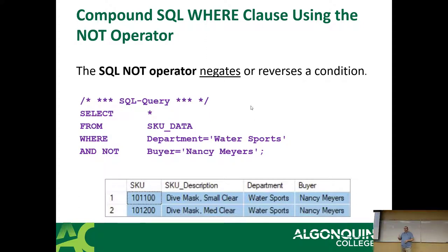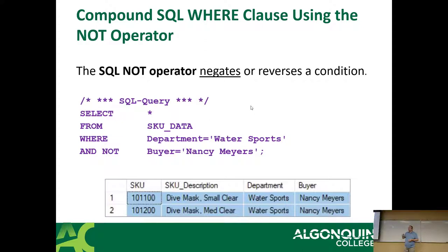NOT negates: SELECT * FROM sku_data WHERE department = 'Water Sports' AND NOT buyer = 'Nancy Mayer' gives you everything that's not Nancy Mayer. Please don't write it that way though — it's hard to read. I'd prefer: WHERE department = 'Water Sports' AND buyer != 'Nancy Mayer'. It's the exact same thing and way easier to understand.